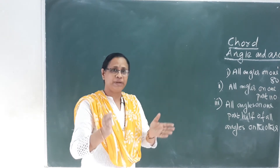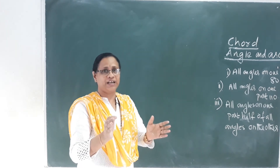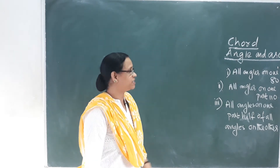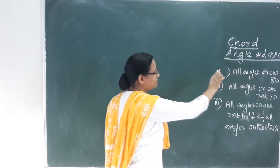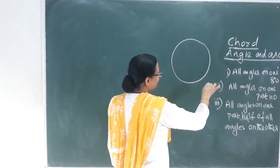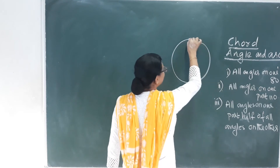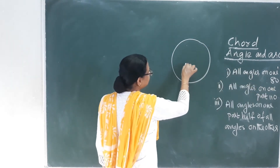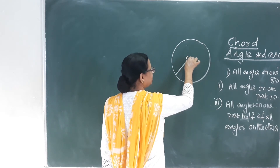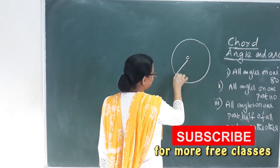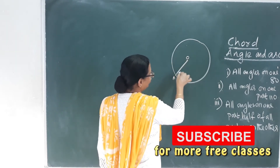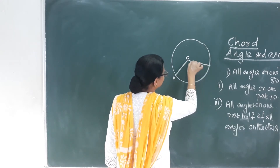For one arc segment, the inscribed angle is 80 degrees. The central angle is double the inscribed angle, so the central angle is 160 degrees. The remaining arc has a central angle of 360 minus 160, giving the other part.